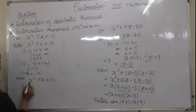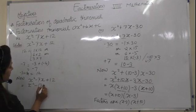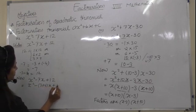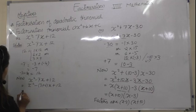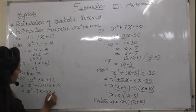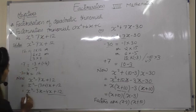So we write: x squared minus 3x minus 4x plus 12. Regrouping the terms to factorize by grouping.